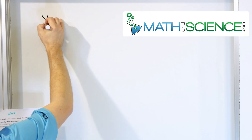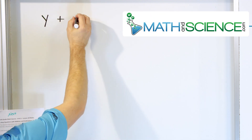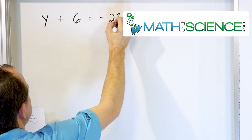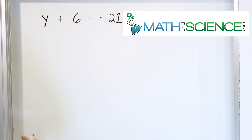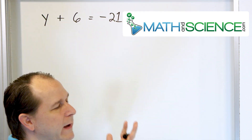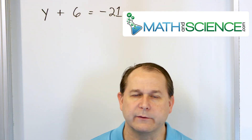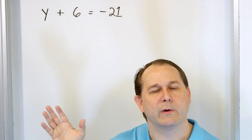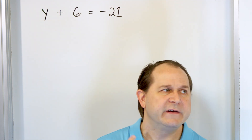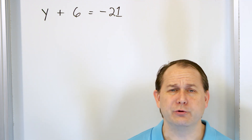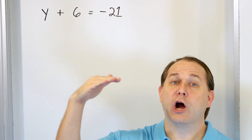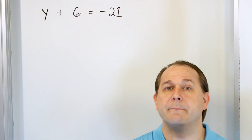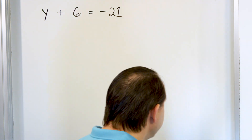Let's say I give you the equation y plus 6 is equal to negative 21. Now we can solve it, but we also need to know why would you ever write an equation like this? I'll give you a quick example — I can make up anything that this equation could represent. So let's say you're a scuba diver, underneath the water surface, and you start off at some depth below the water surface.